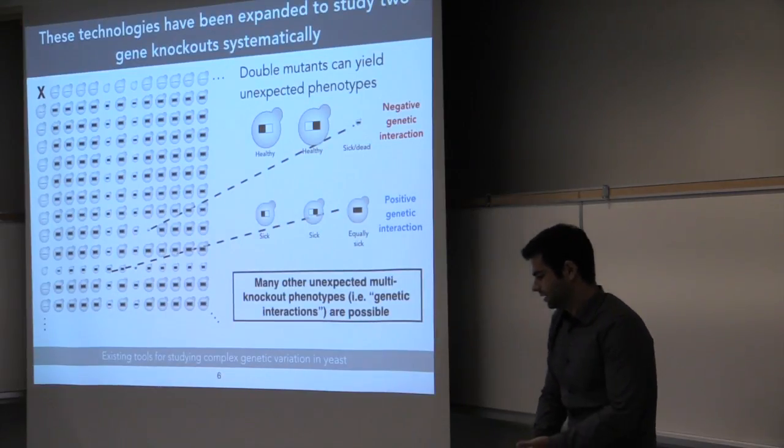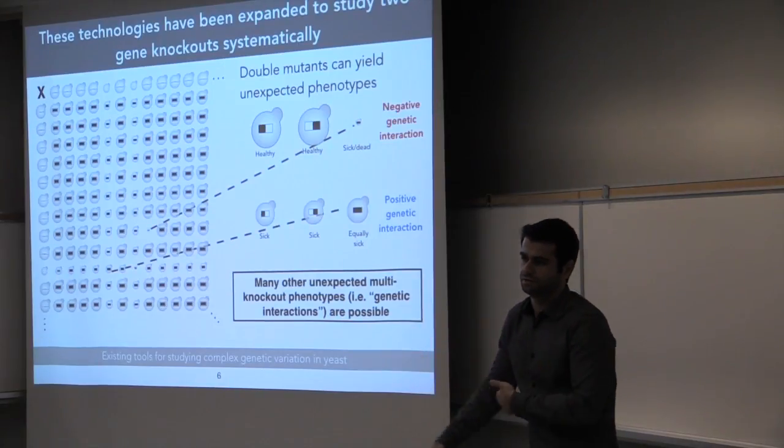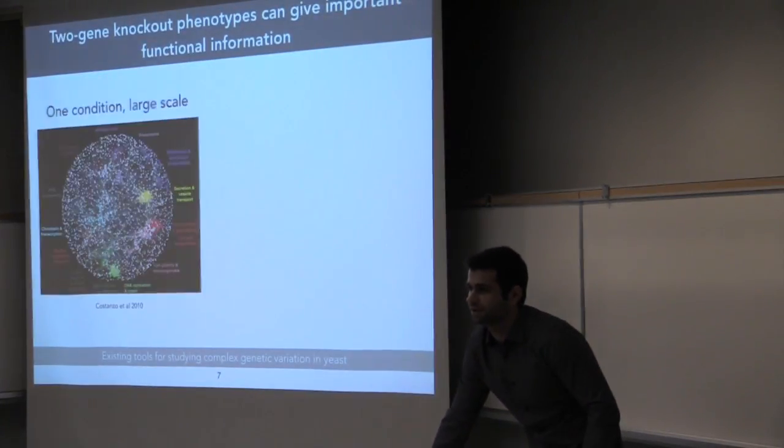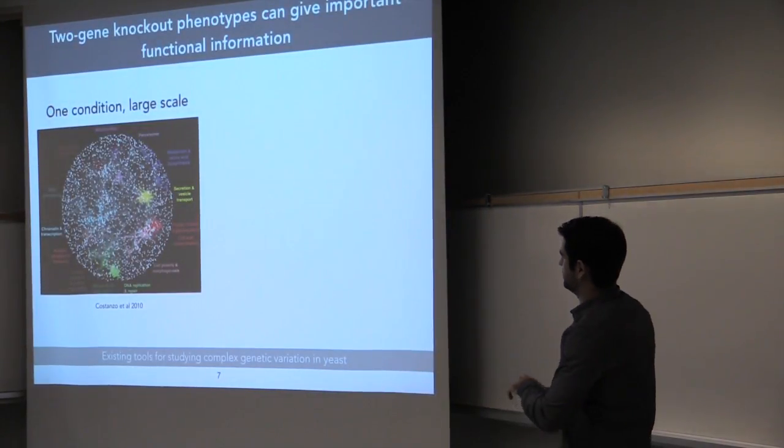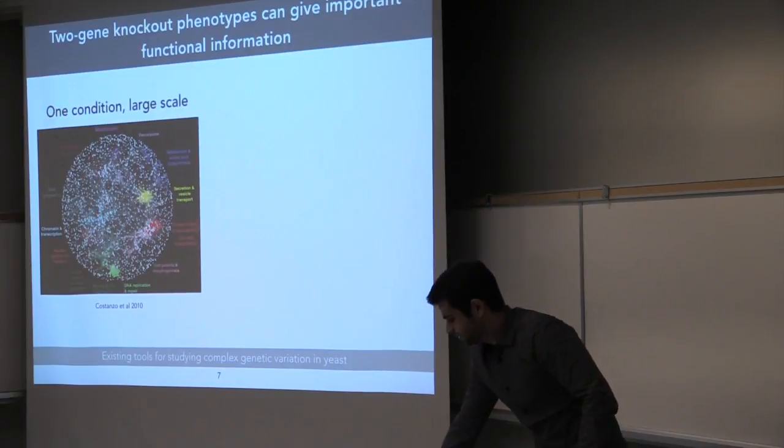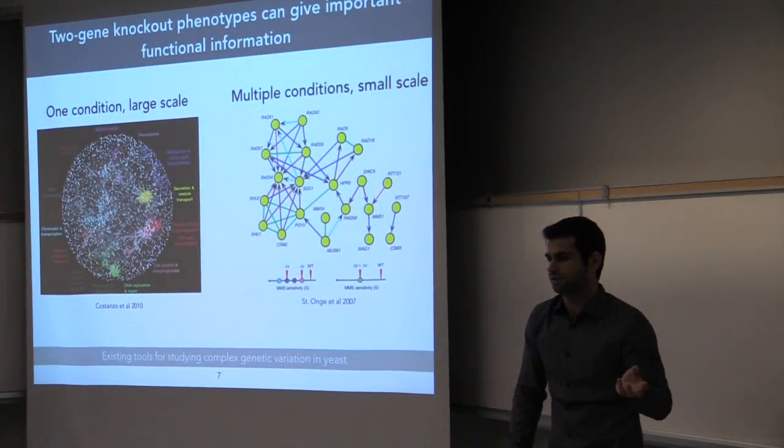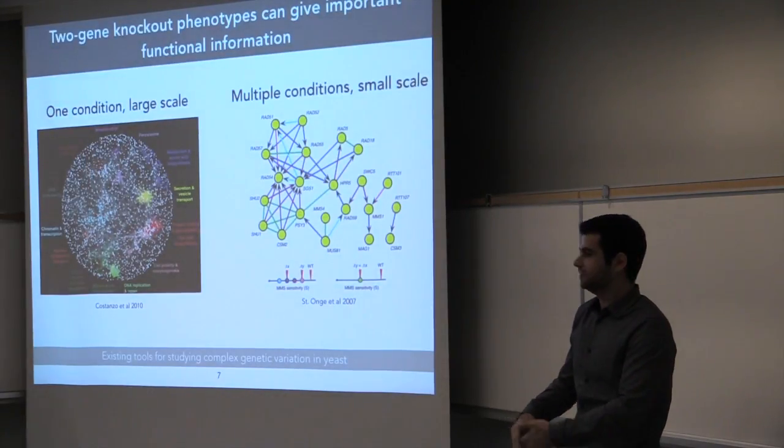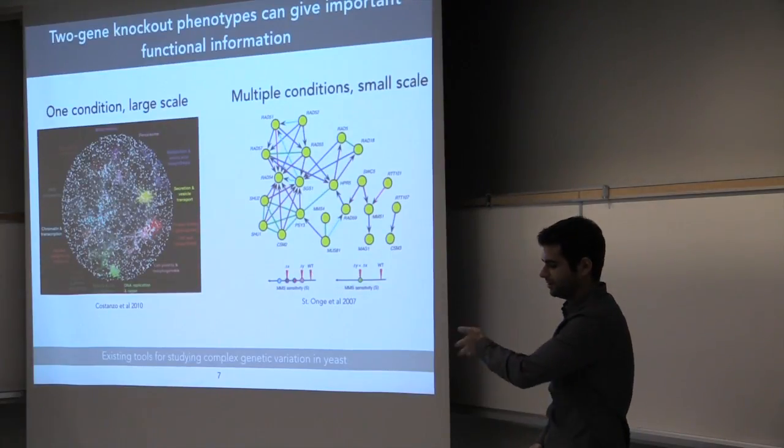And of course, there are many other unexpected multi-knockout phenotypes or genetic interactions which are possible. And these are very important because if you make these double knockout profiles, you can use them to cluster genes based on function, or if you do it on a small scale under multiple conditions, you get these genetic relationships, which in many ways reflect what is known about the biology of these genes in the given pathway, in this example, in DNA repair under MS stress in yeast.